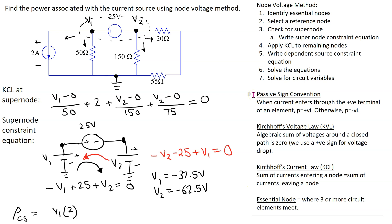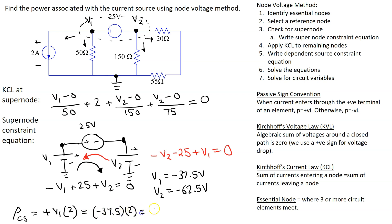We apply passive sign convention to decide the sign: the current is entering the terminal marked plus, so we assign a plus sign to the power calculation. Substituting values gives minus 37.5 times 2, which is minus 75 watts. This negative answer signifies that the current source is delivering power to the circuit.